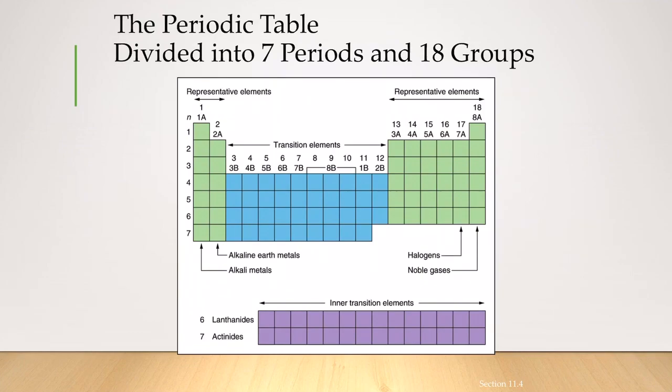In the representative elements, you have the alkali metals, which is the first column, and the alkaline earth metals are going to follow it. And then on the other side, you have a total of six columns.